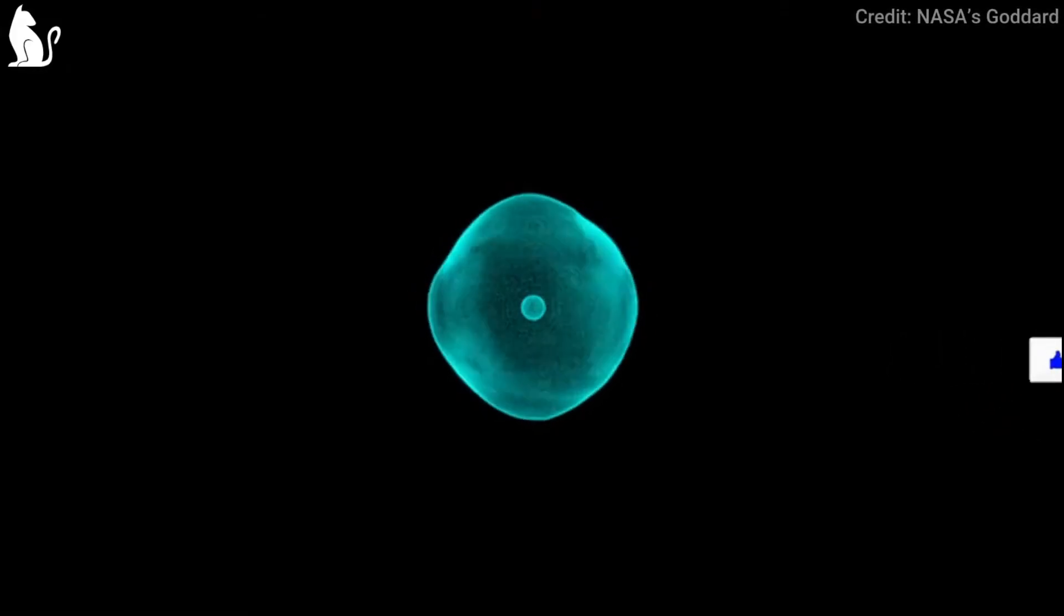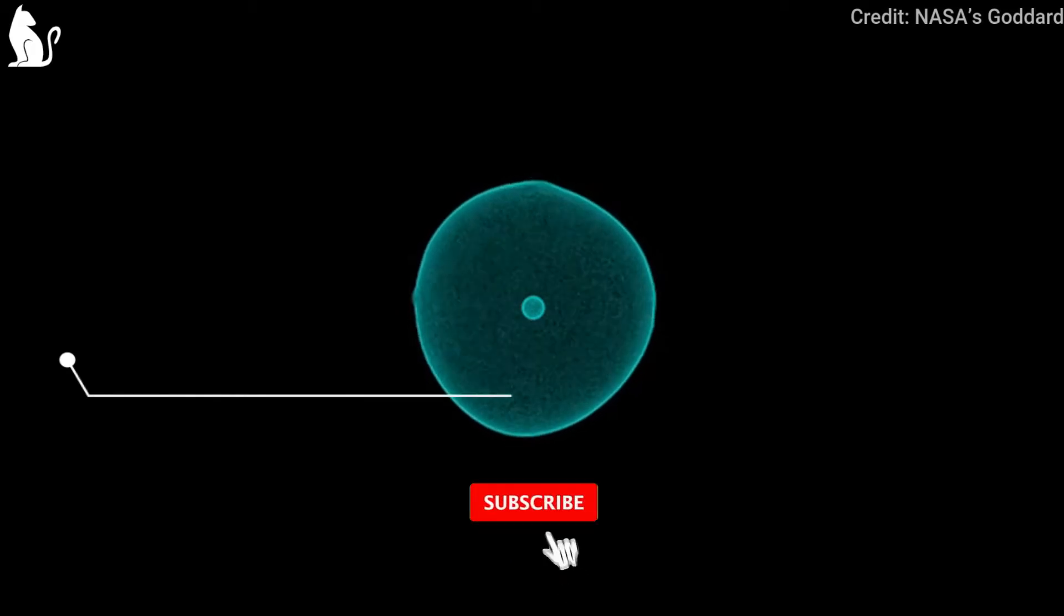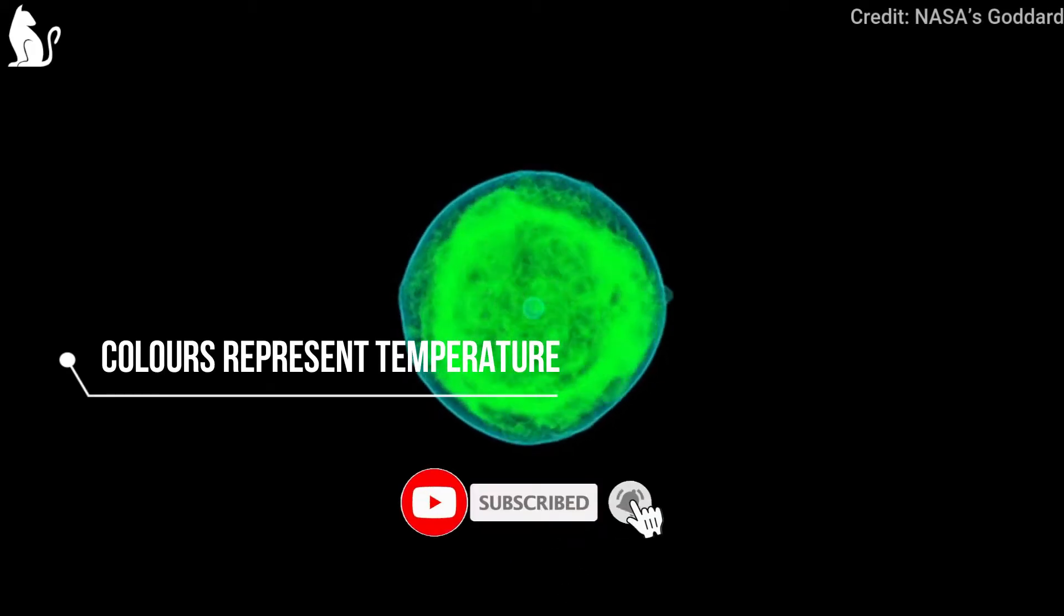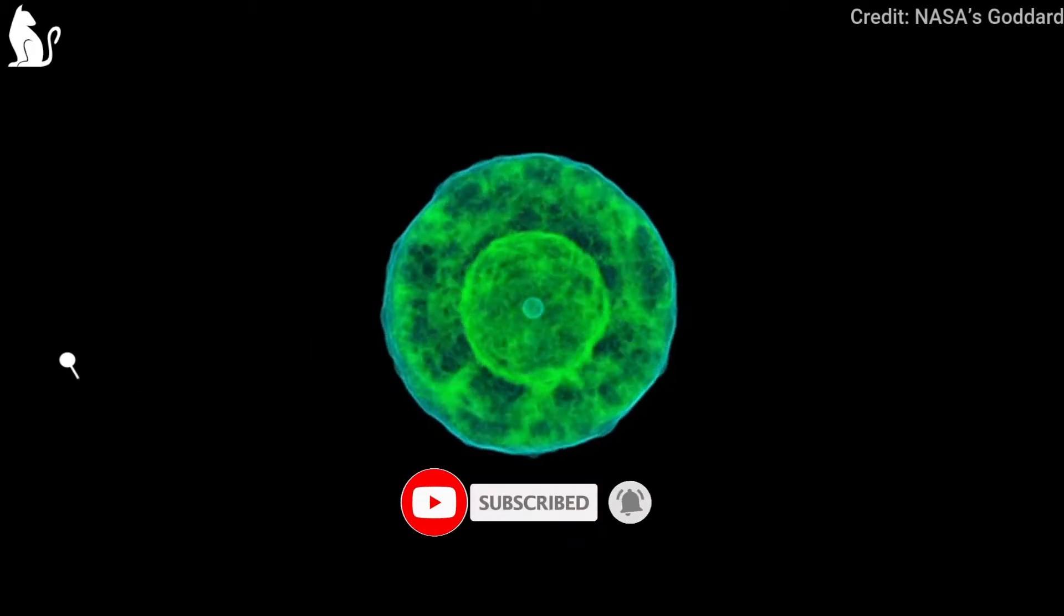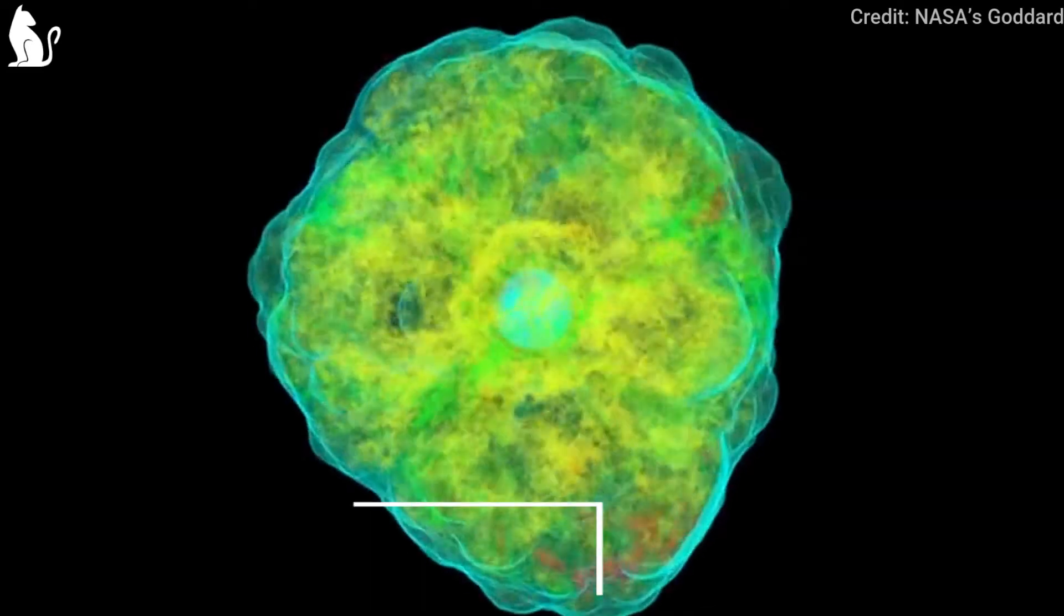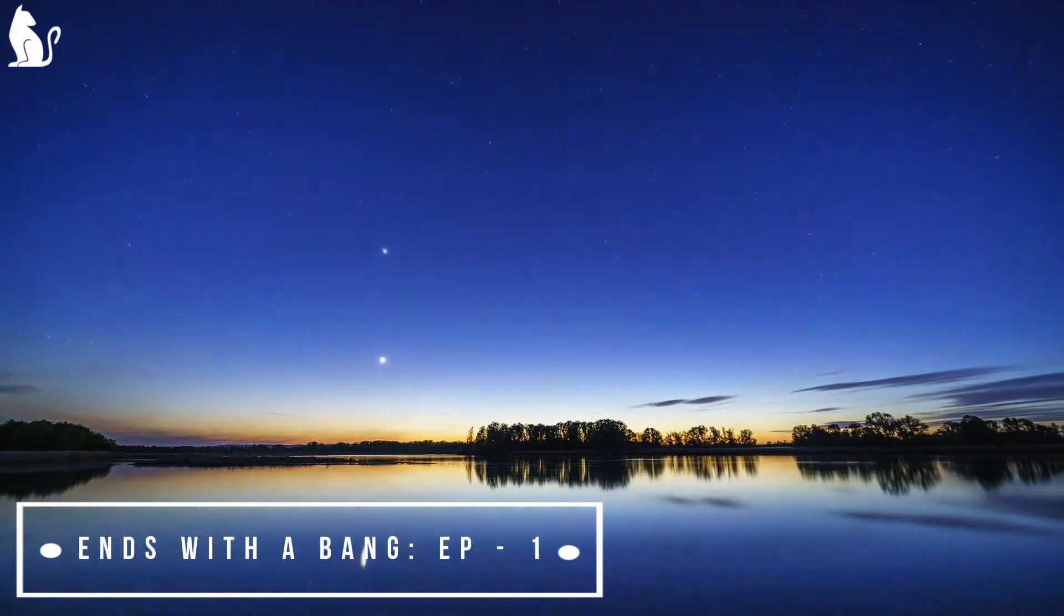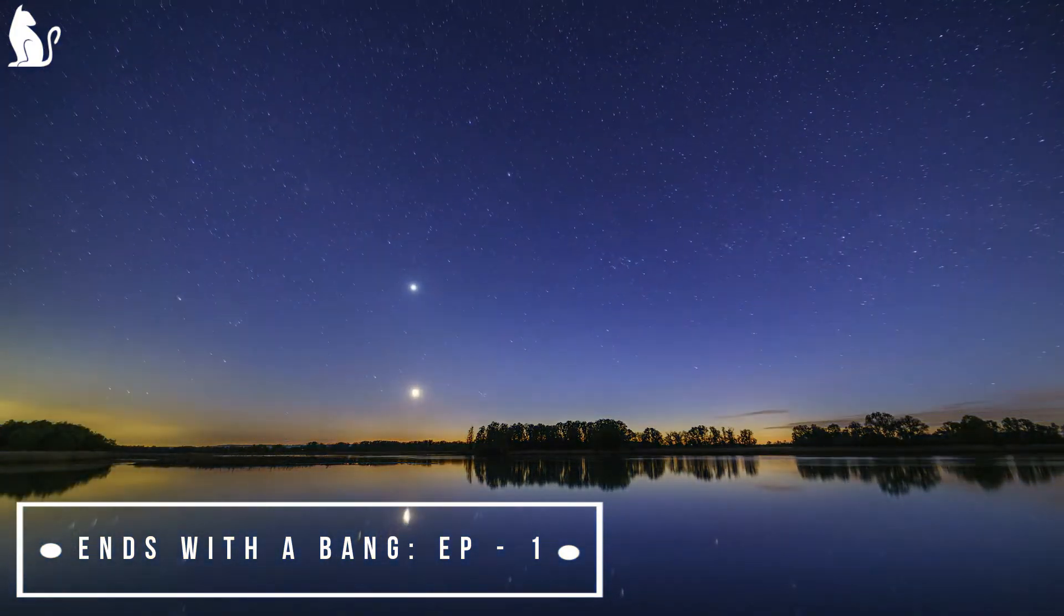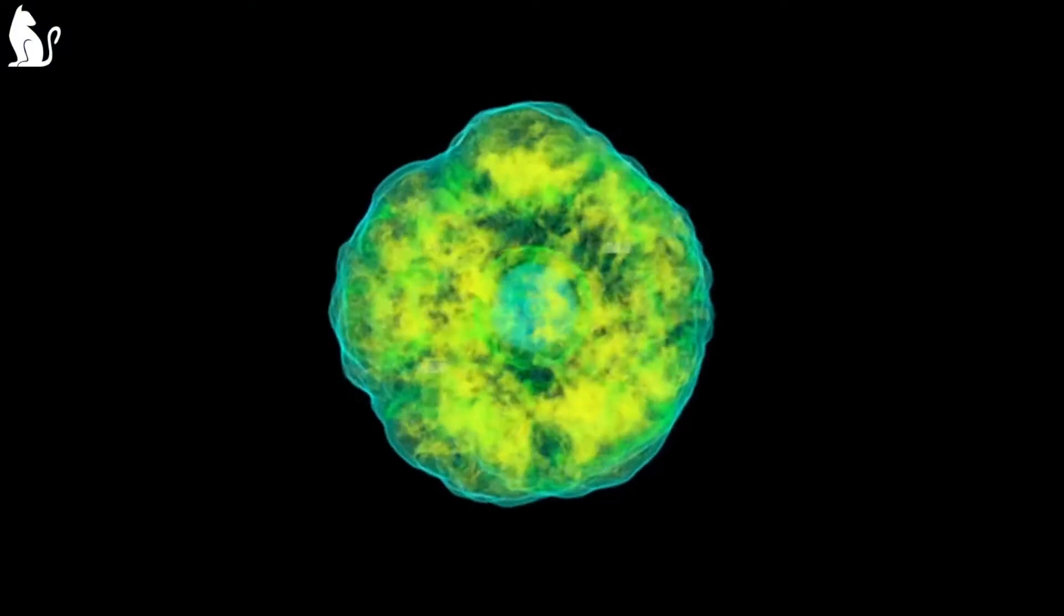A supernova is so big that we cannot probably miss watching them with the naked eye. Supernovas are the most powerful explosion in the entire universe. When they occur, they should brighten up the night sky. But we do not really see any. Why so? Let's learn some physics.